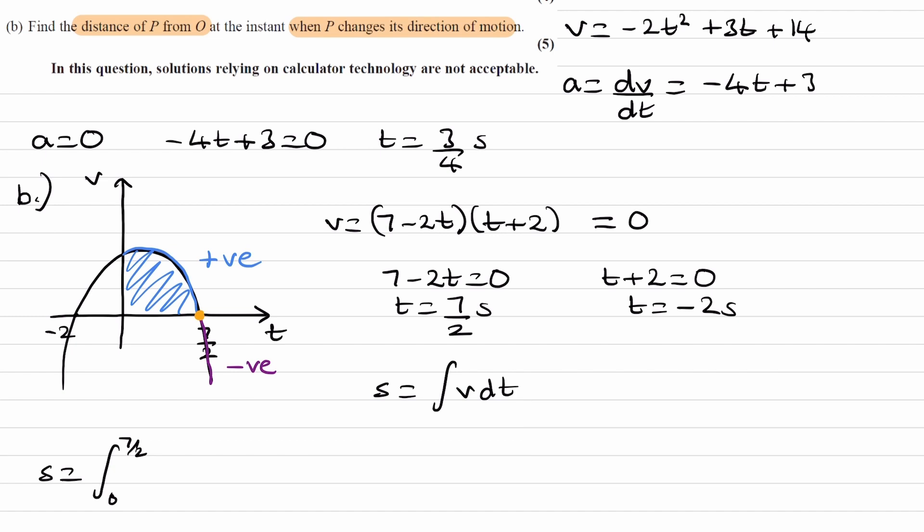Our equation for velocity is what we have up here. Put that in. Minus 2t squared plus 3t plus 14. Integrate this between 0 and 7 over 2. This is then minus 2t cubed over 3 plus 3t squared over 2 plus 14t. And then we can just put in the two limits, 0 and 7 over 2.